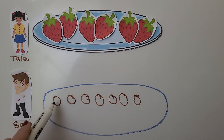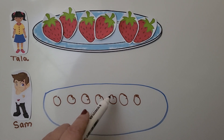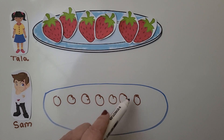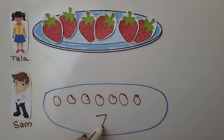He has one, two, three, four, five, six, seven. He has seven strawberries. Six and one more is seven.